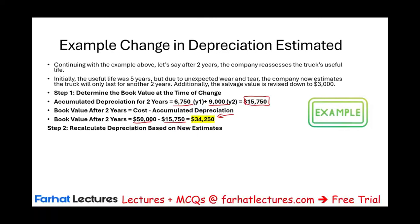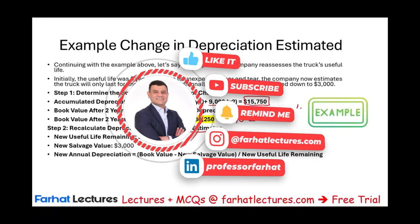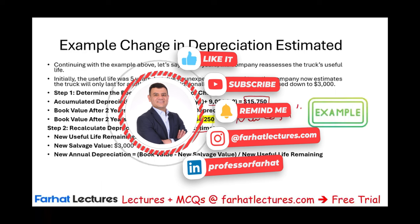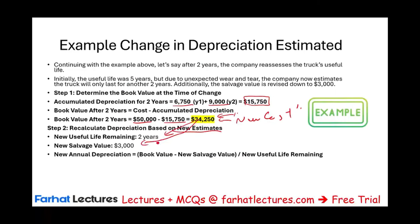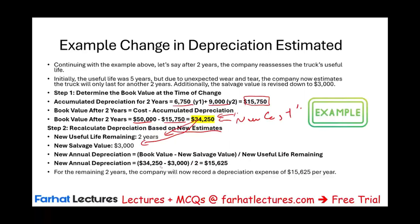Now we recompute depreciation based on the new estimates. Think of the book value of $34,250 as the new cost. For the remaining two years, with a new book value of $34,250 and a new salvage value of $3,000, we apply the formula: new book value minus salvage value divided by remaining two years gives a new depreciation expense of $15,625 per year. Do we go back and change prior years? No — year three and year four will use $15,625. We don't change year one and year two. It's handled prospectively.